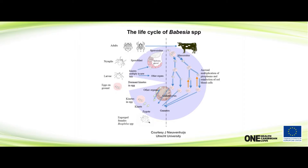When the tick bites a host with the merozoite, inside the tick they form gametocytes and gametes. These gametocytes form zygotes and then kinetes, which spread to all the other organs in the tick, including the eggs — that's how you get transovarial transmission. The kinetes go to the salivary glands of the tick, located in the cavity of the tick. When adult ticks feed on cattle, they transmit the sporozoites into the host, which again turn into merozoites, and the cycle just spreads and spreads.